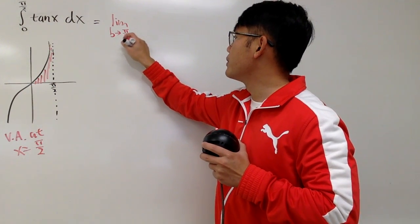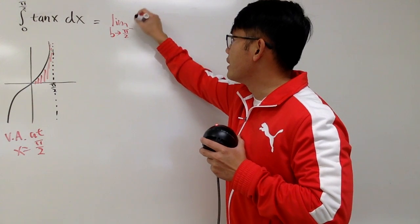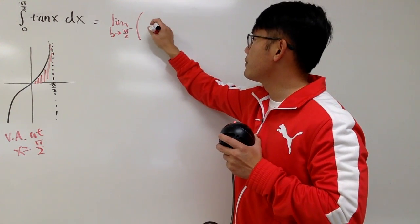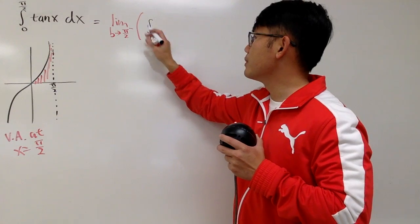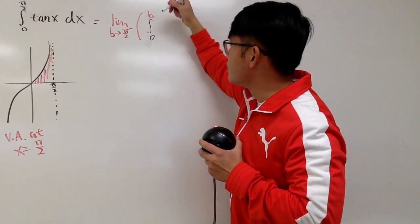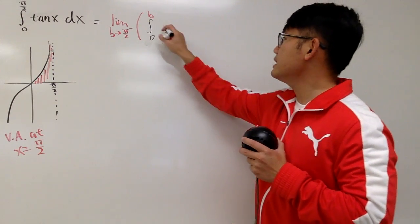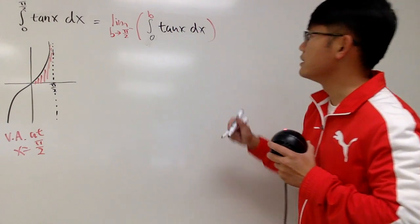So, B approaching pi over 2 minus. And you have to look at this right here being the integral from 0 to pi over 2. But we say that's the B is approaching 2 pi over 2 minus. And then you have the tangent x dx. And close this integral.